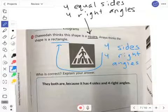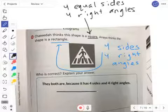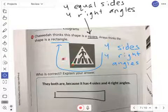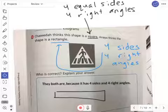We usually see rectangles that look like this. But this too, as long as it has four sides and four right angles, that's a rectangle.